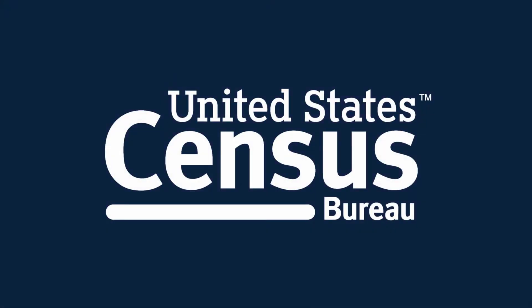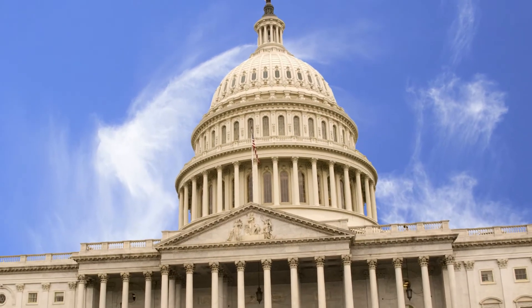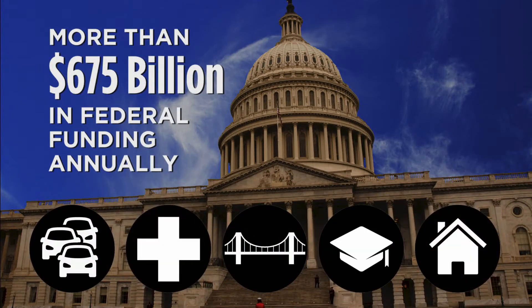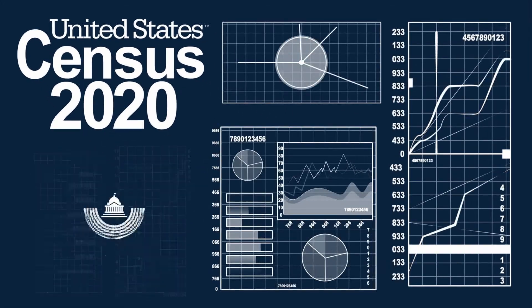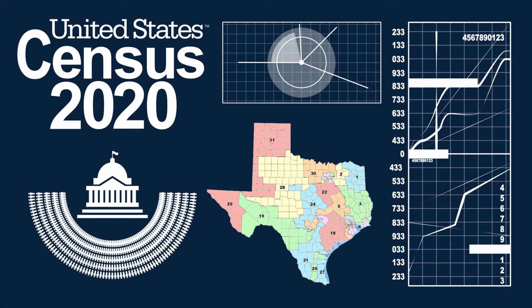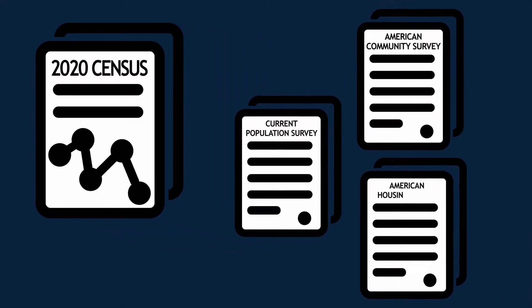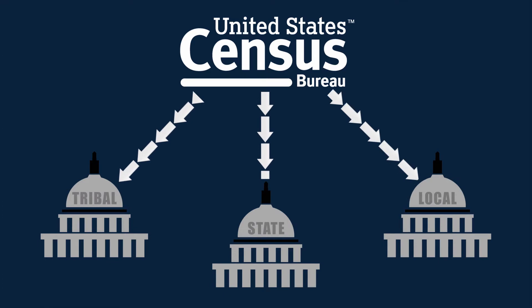The U.S. Census Bureau collects the most comprehensive data on the nation's people, places, and economy. This data is used to determine the annual allocation of more than $675 billion in federal funding for infrastructure, programs, and services. Every 10 years, the Census Bureau conducts the decennial census to provide population data used to apportion seats in the House of Representatives and determine boundaries for congressional and state legislative districts. To collect this information, the Census Bureau reaches out to tribal, state, and local governments to participate in Census Bureau programs which collect geographic data.